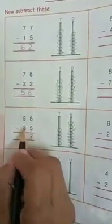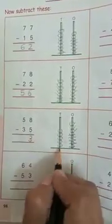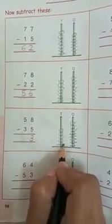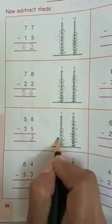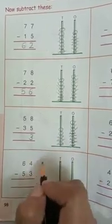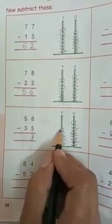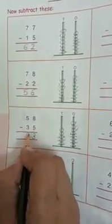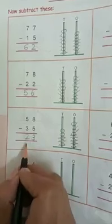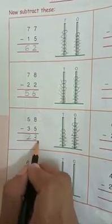Now 3 tens from 5 tens: 1, 2, 3. How many tens are left? 1, 2. Answer is 23.